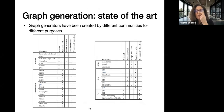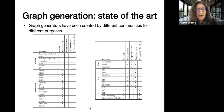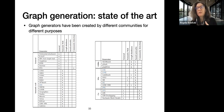We also worked on a survey in ACM Computing Surveys on graph generators, looking at generators from disparate communities: semantic web, graph databases, social networks, community detection, and general graph theory. The idea was: if you need a graph generator for your application, reading the survey lets you choose the one that fits your needs.